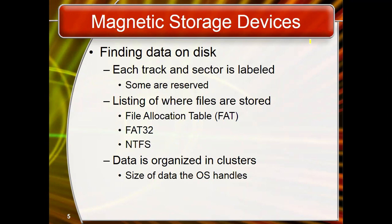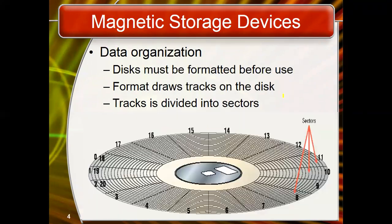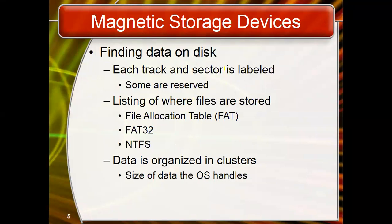When storing data, a sector is the smallest physical storage unit on the disk, located on the tracks. A sector is a part or section of a track, which is a line surrounding the center. Each sector is almost always 512 bytes in size, and each sector is labeled using factory track positioning data. Sector identification data is written immediately before the sector contents, identifying the starting address of the sector.